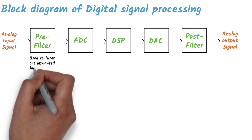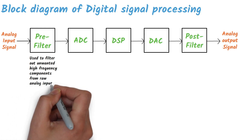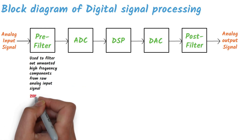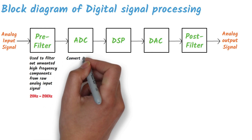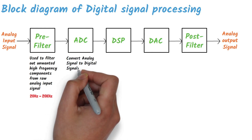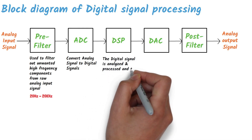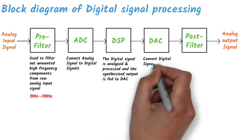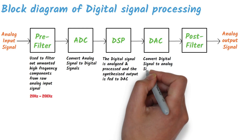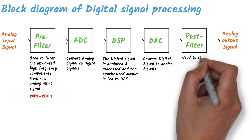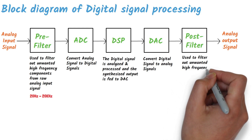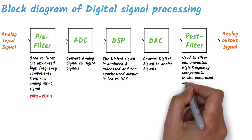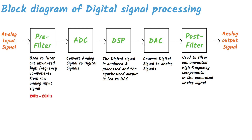The pre-filter is usually a low-pass filter used to filter out unwanted high-frequency components from the raw analog input signal. The ADC converts analog signals to digital signals, which are then fed to the DSP for analysis and processing. The synthesized output is fed to the DAC, which converts digital signals back into analog signals. Finally, the post-filter is used to filter out any unwanted high-frequency components in the generated analog signal. Often, amplifiers are provided at the beginning and end to amplify the incoming and outgoing signals.